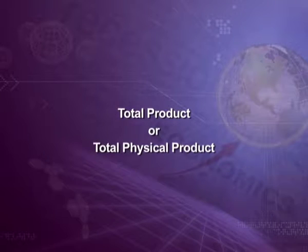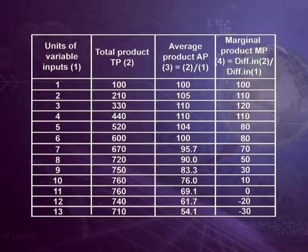First is total product or total physical product. Total product is the total output resulting from the efforts of all the factors of production combined together at any time. Total product varies with the quantity used of the variable factor. As we employ more and more units of labour, initially total product rises at an increasing rate, then rises but at a decreasing rate, and eventually declines from the 12th unit of labour.